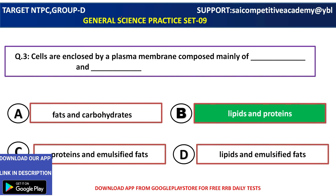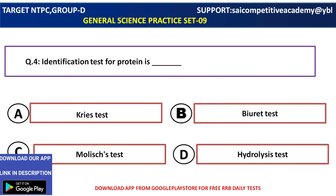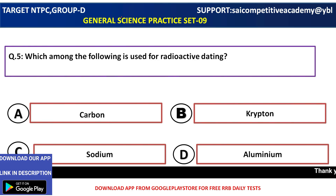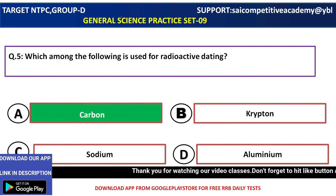Lipids and proteins — cells are closed by plasma membrane. Identification test for protein. Which among the following is used for radioactive dating? Radioactive dating uses carbon, so carbon is the correct answer.